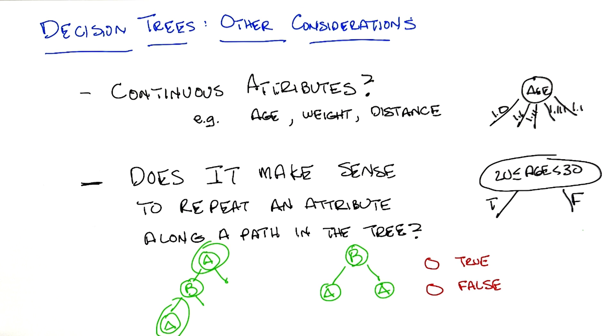Well, we wouldn't want to ask the same question about the same attribute. So we wouldn't have age between 20 and 30, and then later ask again age between 20 and 30. But maybe we'd want to ask, given that we're less than 20, are we teenagers or not? So we might have a different range on age later in the tree.